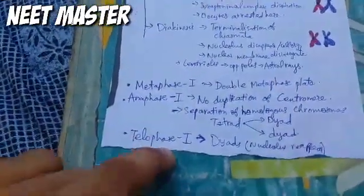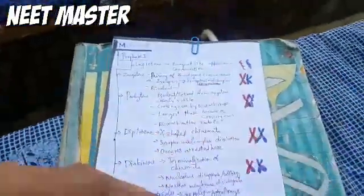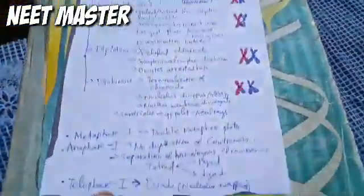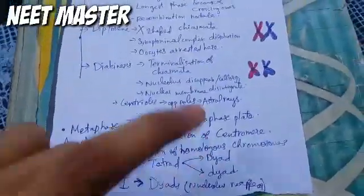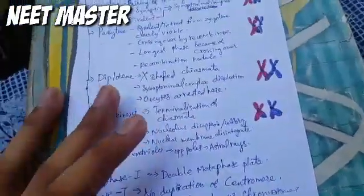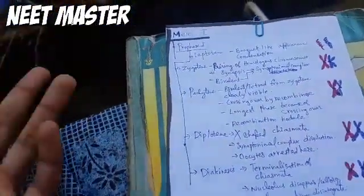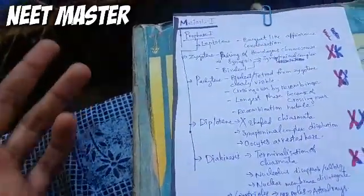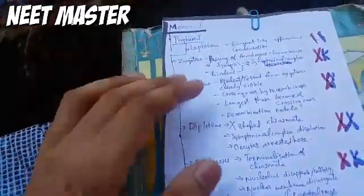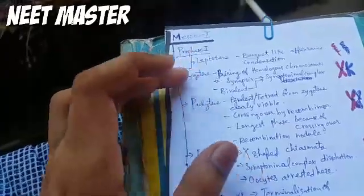Then Telophase 1 will be applied to the dyad, and the nucleus will reform, and then inter-kinesis will be applied leading to Meiosis 2. Meiosis 2 will then proceed. This is Meiosis 1 — we have discussed Pro Phase 1 and all its stages.